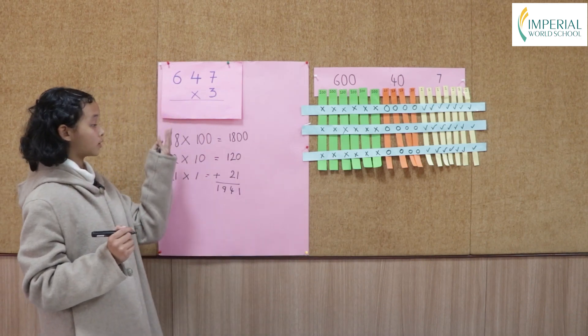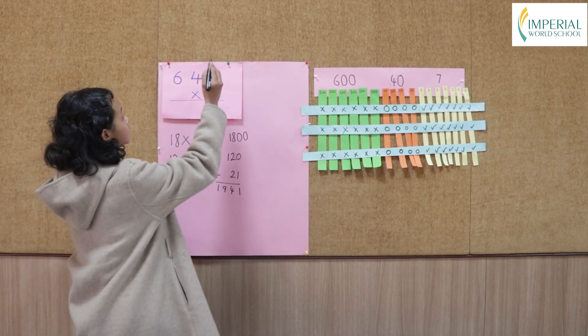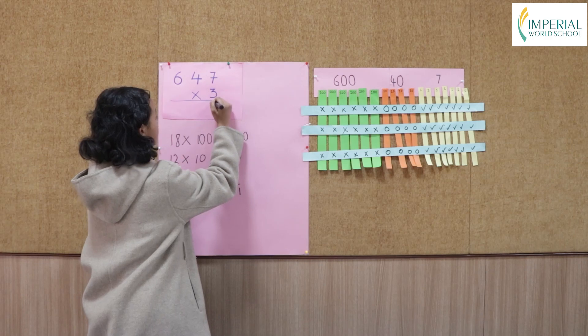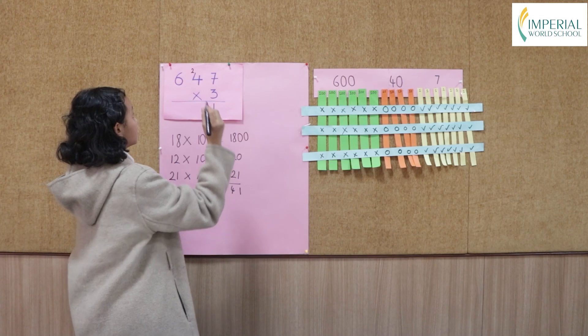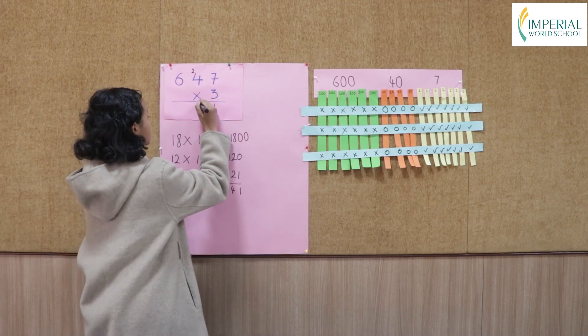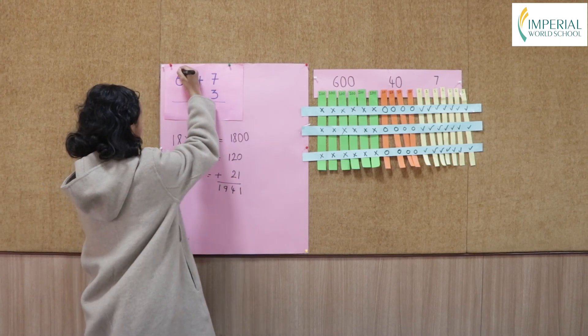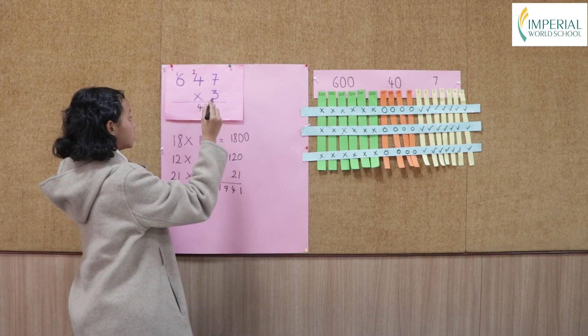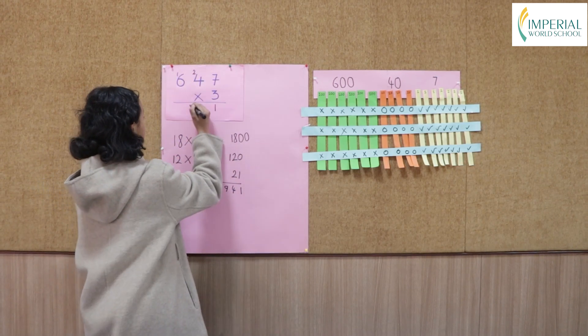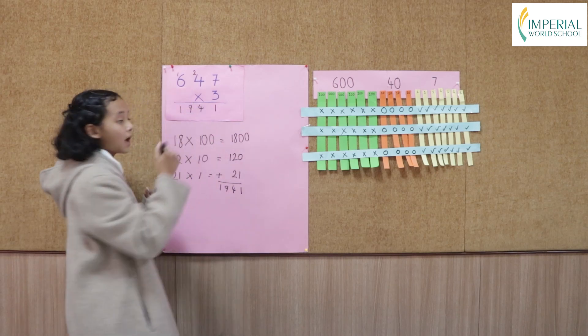Now let's cross-check with the table of 3. 7 times 3 equals 21. 4 times 3 equals 12 plus 2 equals 14. 6 times 3 equals 18 plus 1 equals 19. So the answer matches.